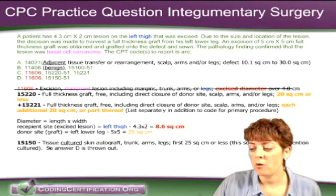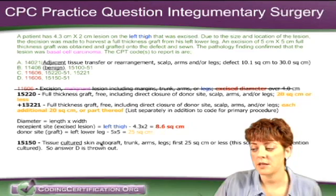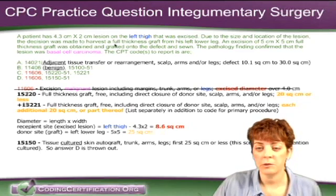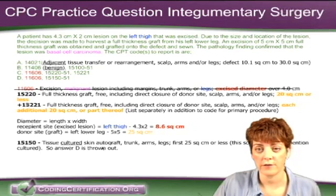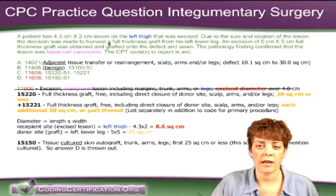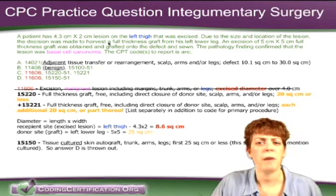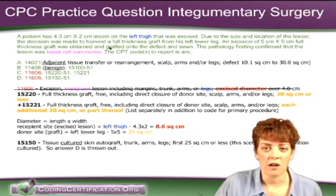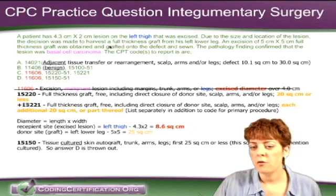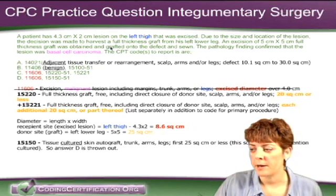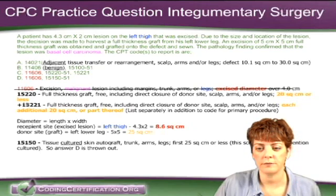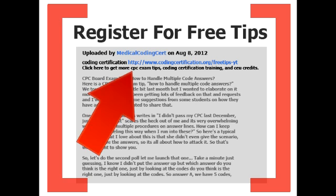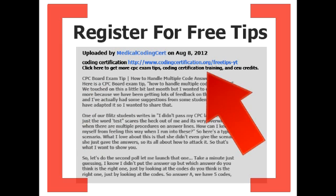You could have thrown out 15150 because that one says tissue cultured skin autograft, and nowhere in the question did it talk about a cultured skin autograft. You would have seen something like they took it out and prepared it — it didn't say that at all. It's a straight up graft. Hopefully that will help you with integumentary type questions. Get more CPC exam tips, coding certification training, and CEU credits at www.codingcertification.org.